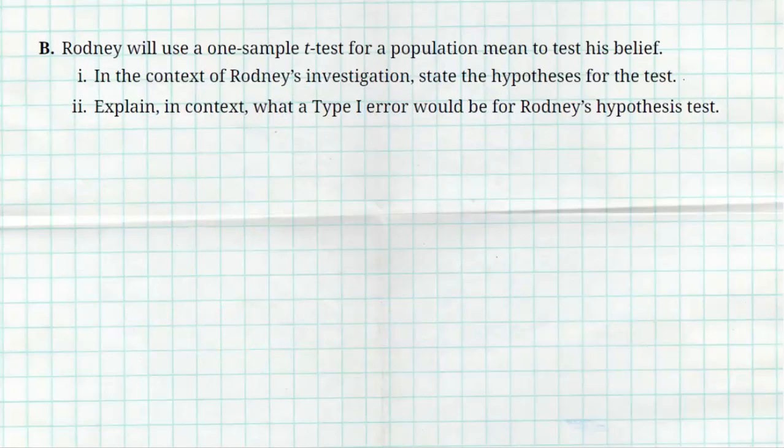Part B also has two parts. Rodney is going to do a one-sample t-test for the population mean to test his belief. That makes sense — he has one sample from 2024, and it's a t-test because the problem deals with means and he doesn't know the population standard deviation. The first question asks: in the context of Rodney's investigation, state the hypotheses for the test.